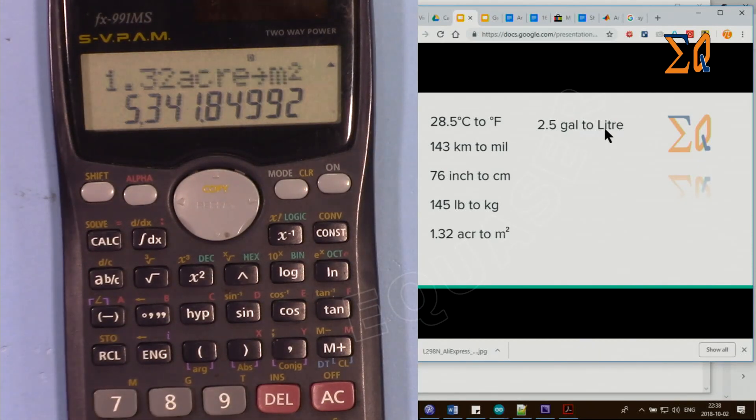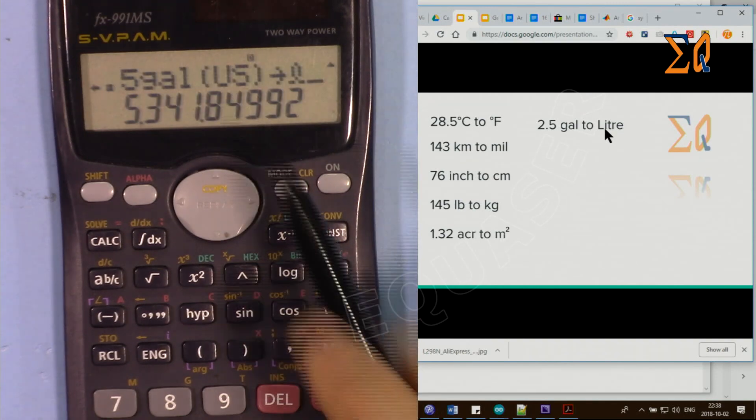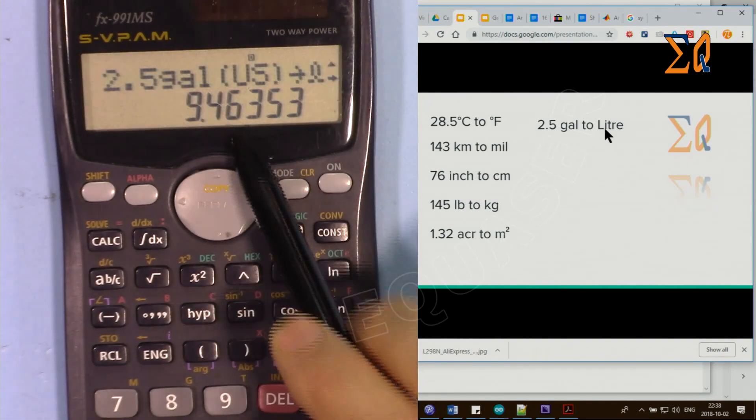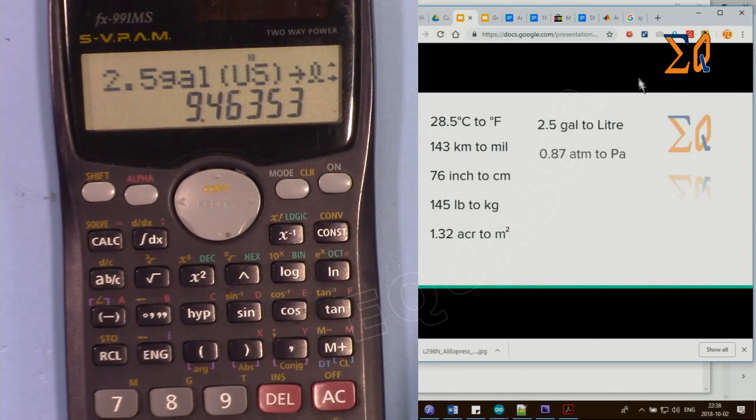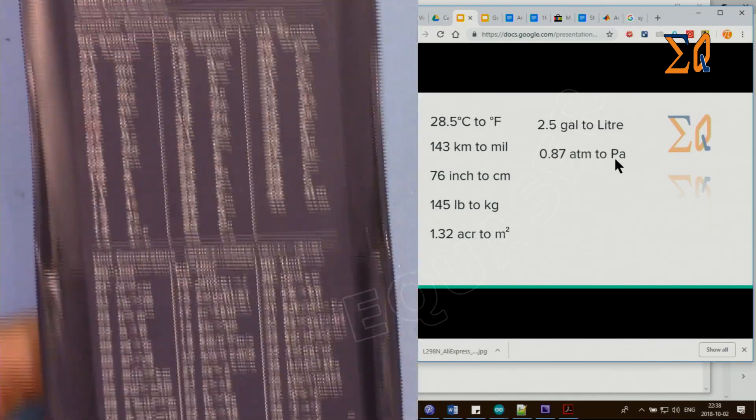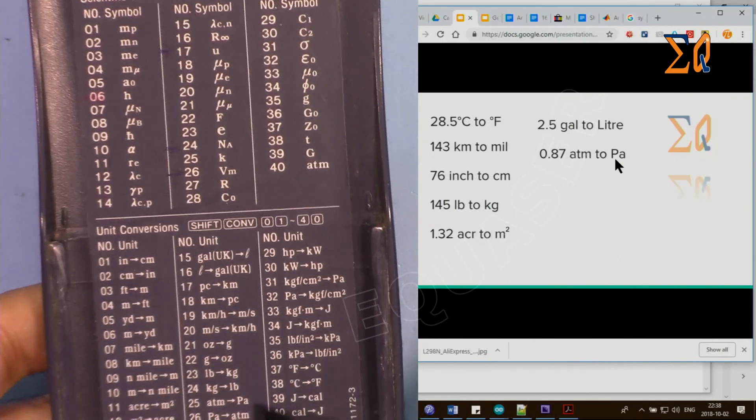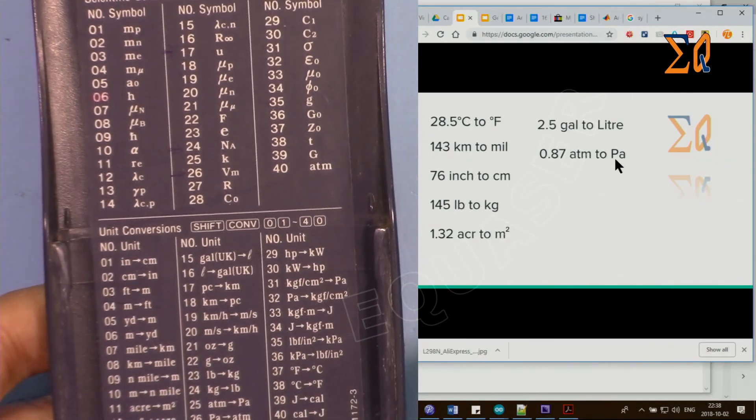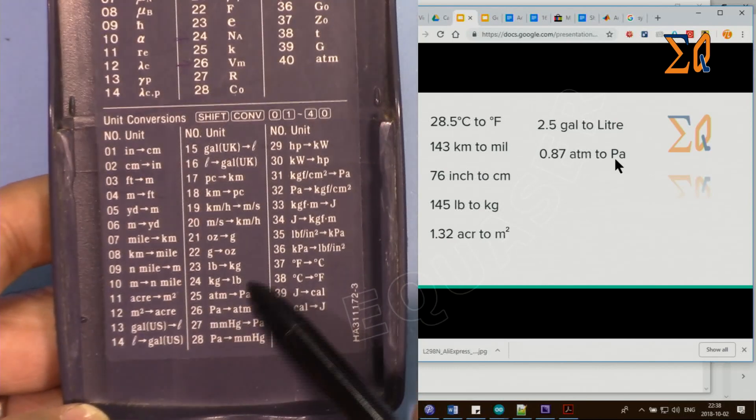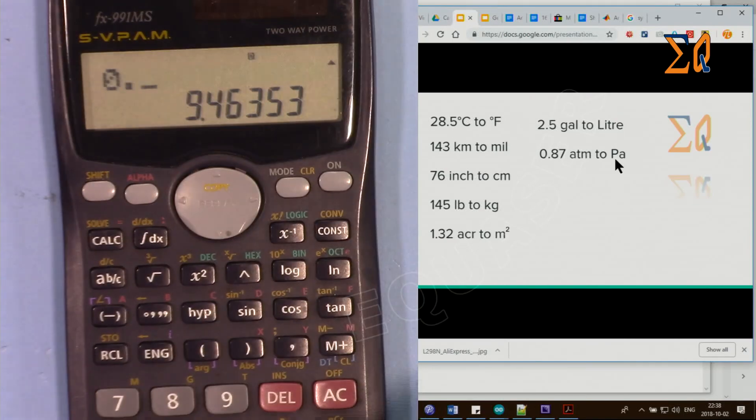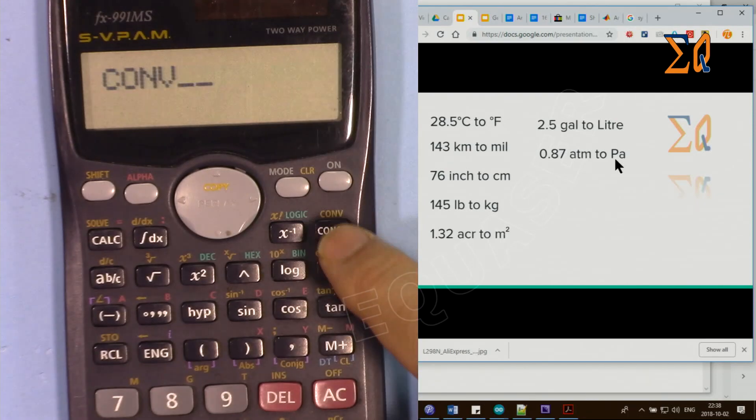0.85 atmosphere to pascal. Here the number is 25. 0.85, atmosphere to pascal, 0.87, second function, 25, gives you 86,123 pascals.